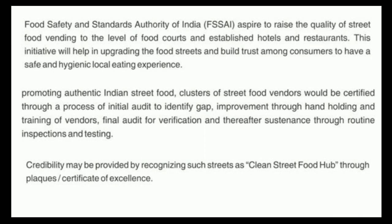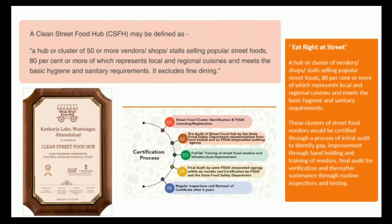Under the Clean Street Food Hub scheme, FSSAI is identifying clusters of 50 or more vendors at a particular place who are selling popular street foods — because popular street foods obviously have more people consuming them. Most of them are selling local or regional cuisines. If they meet the hygienic and sanitary requirements set up by FSSAI, they will be provided with a certificate. The whole certification process involves five steps.